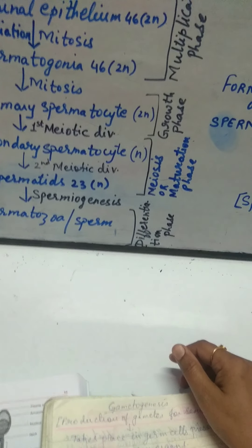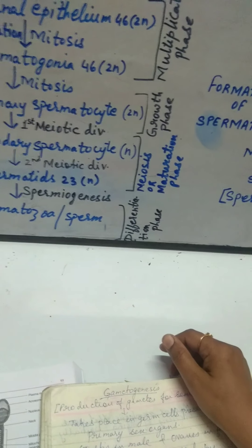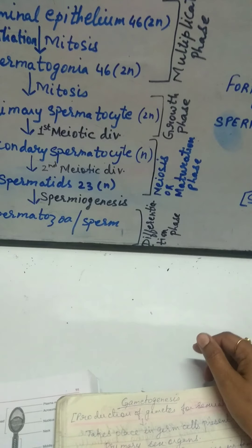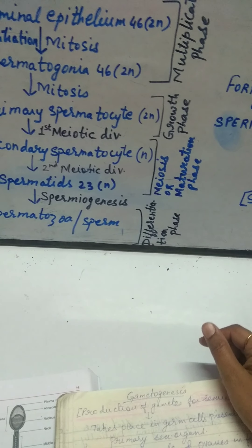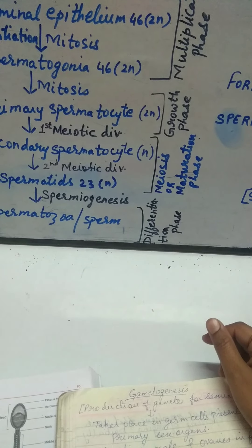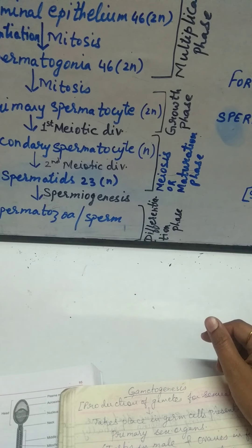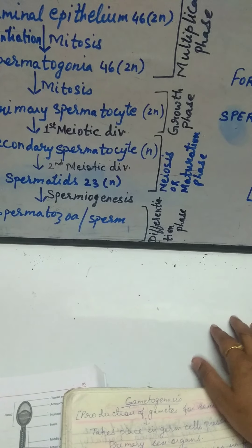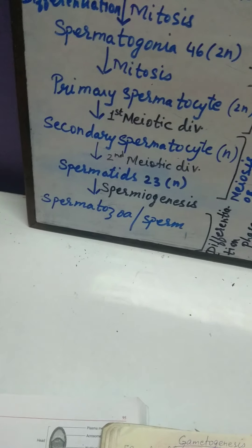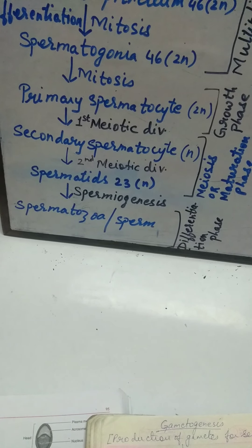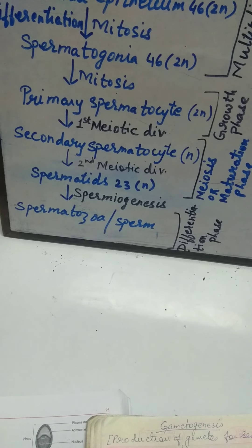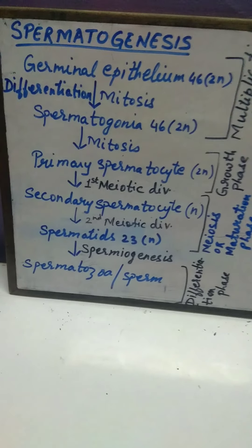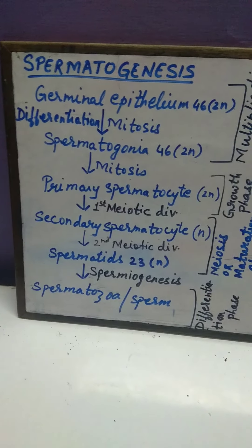Good morning students, welcome to our bio class. Previously we have completed the topic of female and male reproductive system. We discussed the different parts of the reproductive systems and their functions, both in female and male. Today I am going to start the topic gametogenesis.